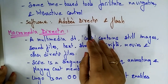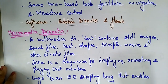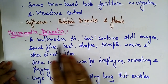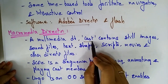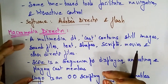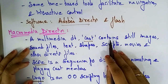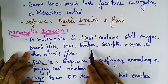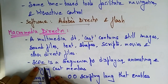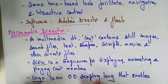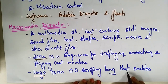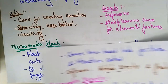In the case of Adobe Director, the multimedia database has three components: Cast, Score, and Lingo. The Cast contains still images, sound files, text, shapes, scripts, movies, and other Director files. The Score is a sequencer for displaying, animating, and playing cast members. The Lingo is an object-oriented scripting language which enables interactivity and programmed control.